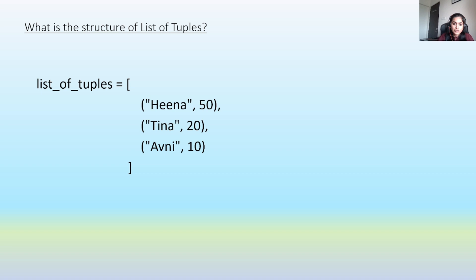First, let's understand the basic structure of a list of tuples. A list of tuples is nothing but multiple tuples inside a main list.